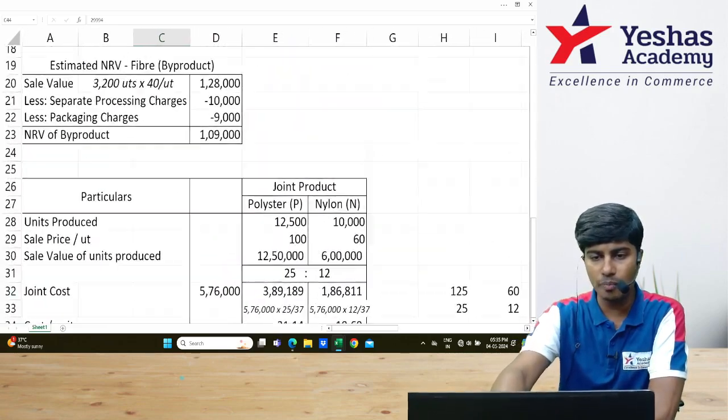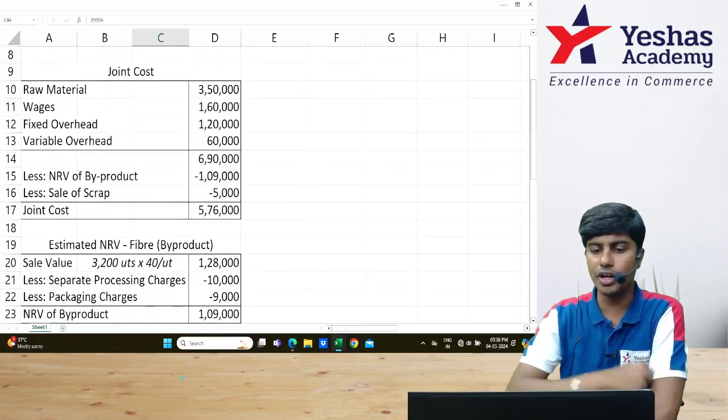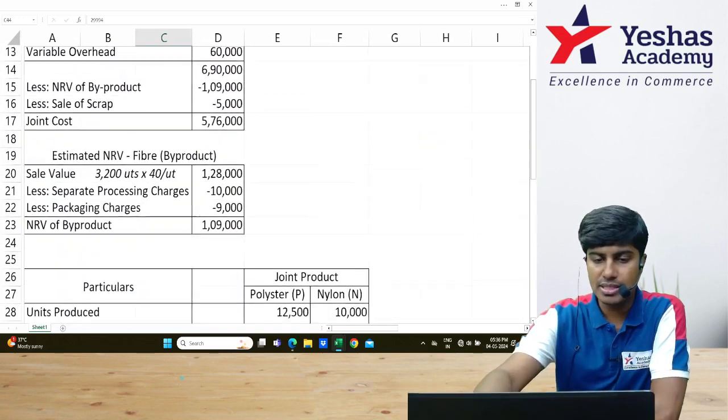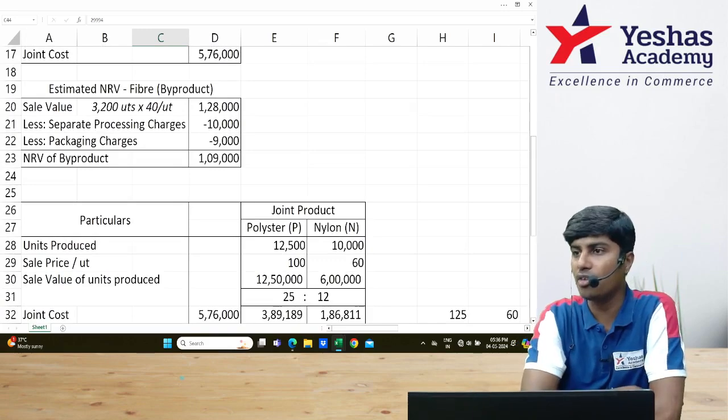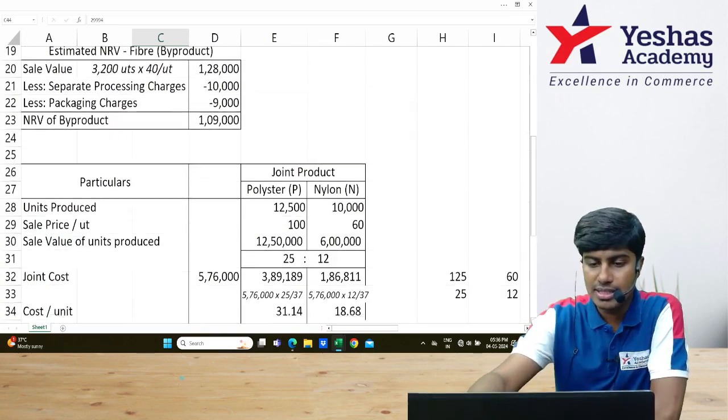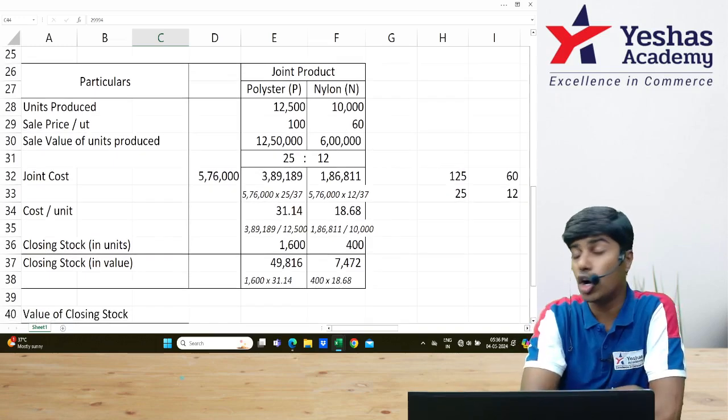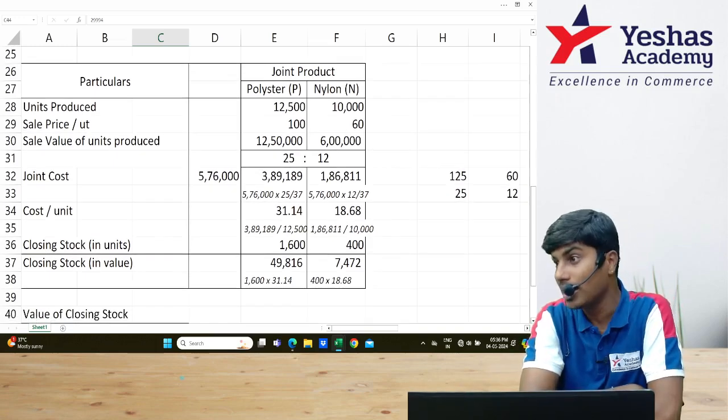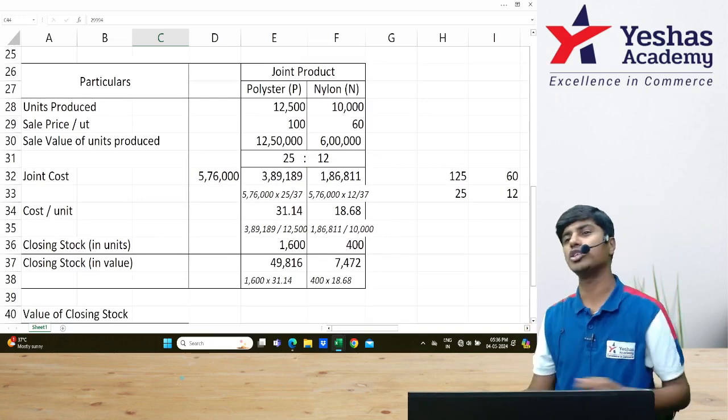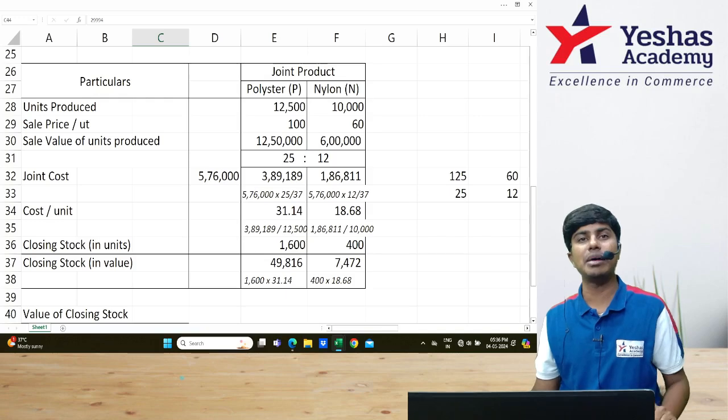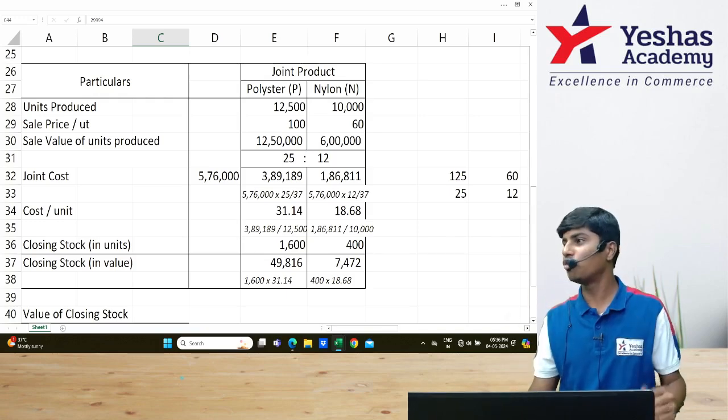If you want the entire answer in one go: first, this is our joint cost computation. This is our estimated NRV of fiber computation. This is our joint product cost allocation along with identification of value of each joint product. This has been asked in our examination for 7 marks for no reason.